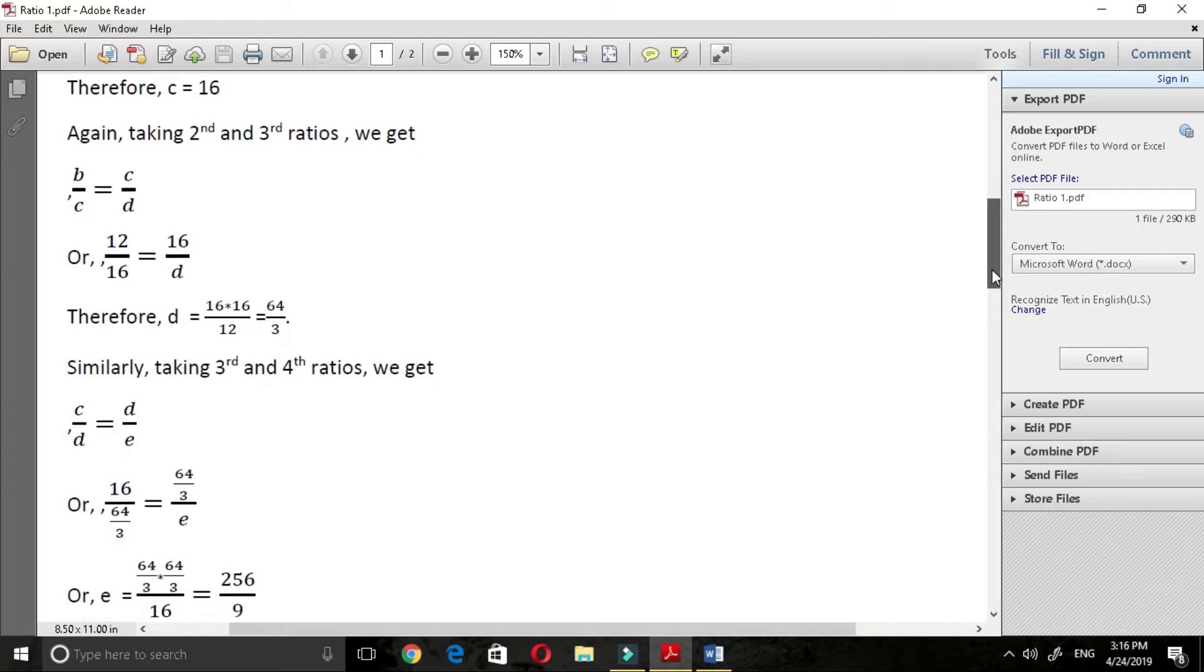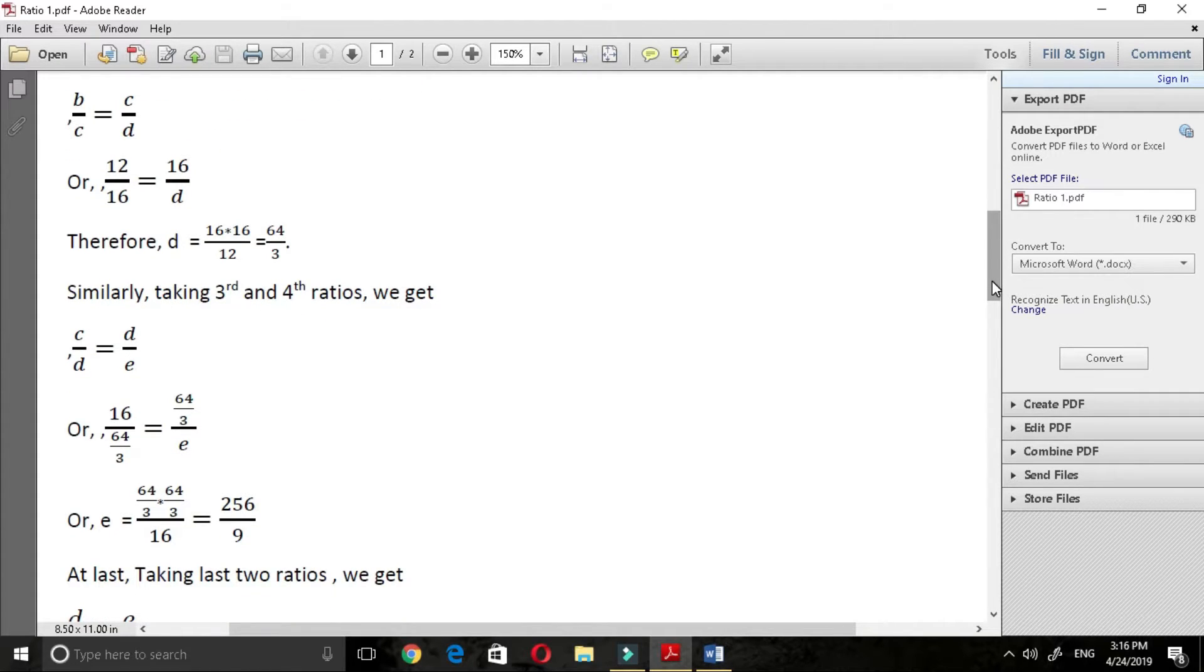similarly taking third and fourth ratios, we get c by d is equal to d by e and after solving it, we get e is equal to 256 by 9. And again at last,